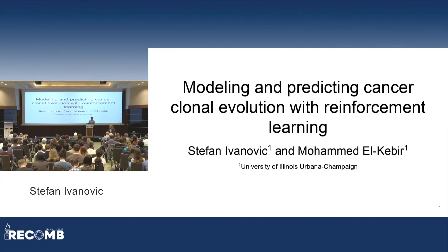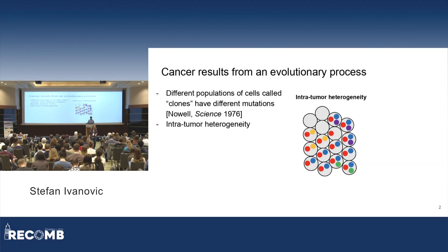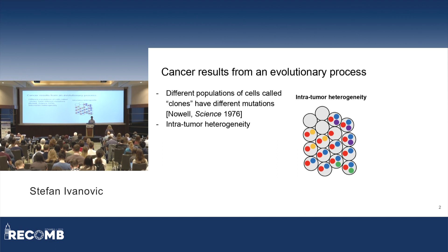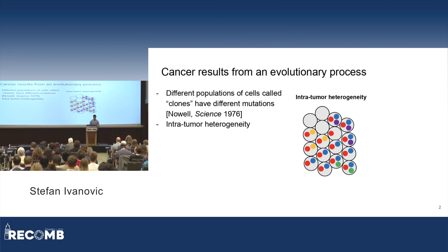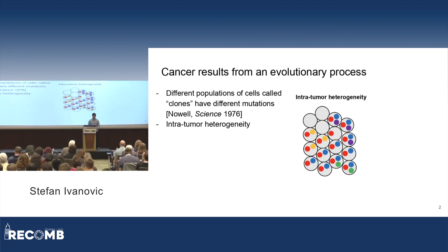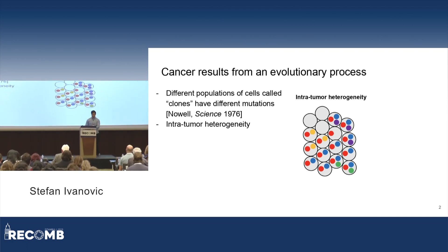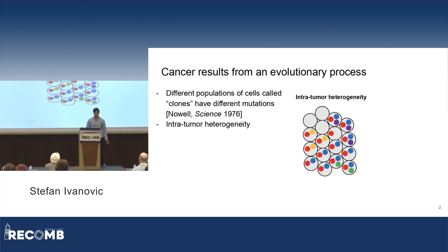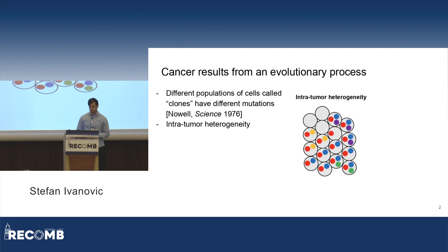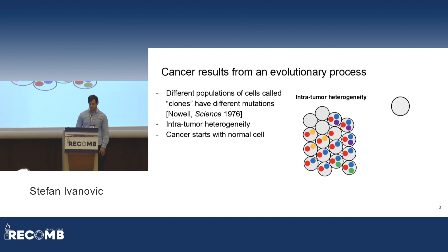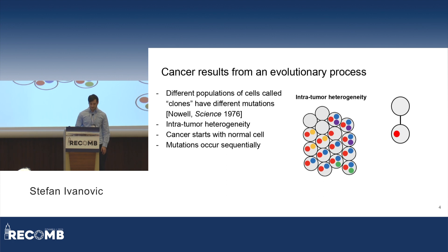I would like to thank the organizers for giving me this opportunity to present my work. As was described in previous presentations, cancer results from an evolutionary process, and there are different populations of cells called clones that have different mutations, as shown in the diagram. This is called intratumor heterogeneity. This evolutionary process starts with a normal cell, then mutations occur sequentially on these clones, generating an evolutionary tree. The question is: what can we learn about cancer from these evolutionary trees?